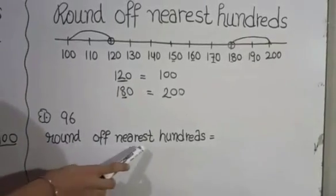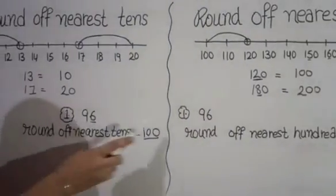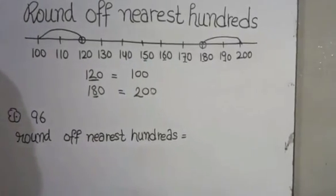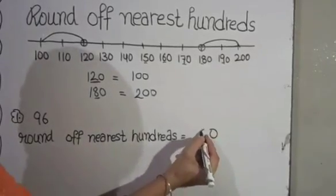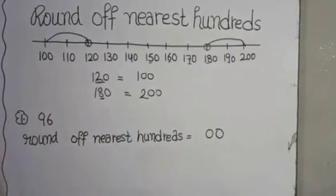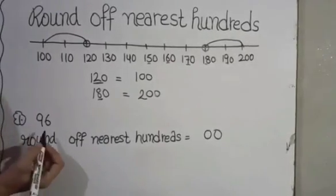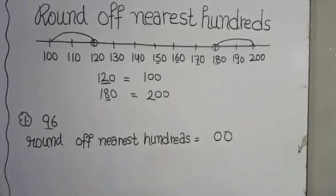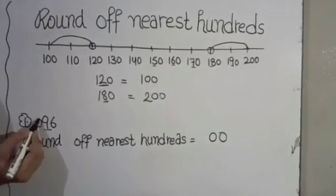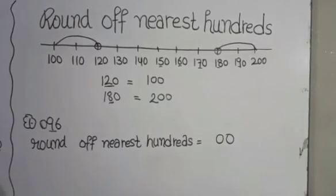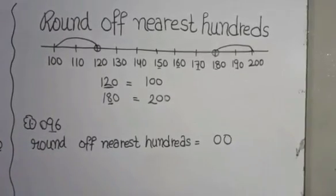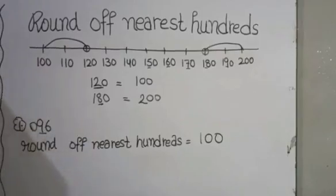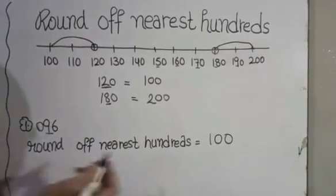Now we will do round off to the nearest 100 with the same number 96. If we want to round off to nearest 100, write two 0s at the back. If we have numbers 5 to 9 at the tens place, add 1 in the hundreds place. If we add 1 to 0, it remains 1. So our answer is 100.